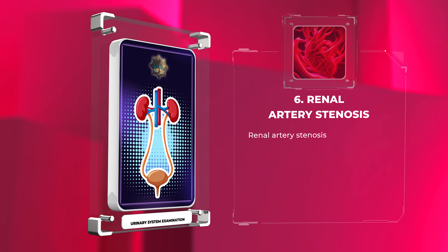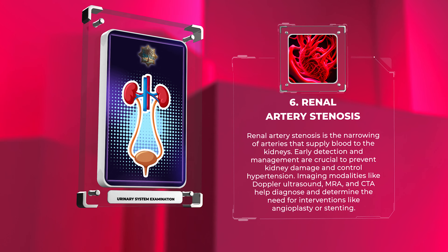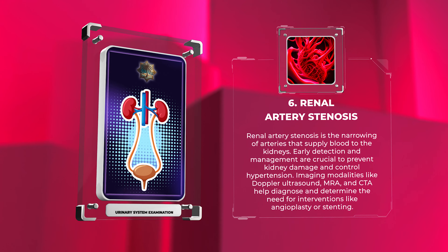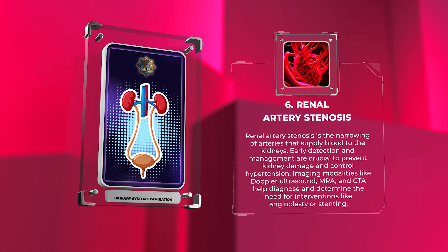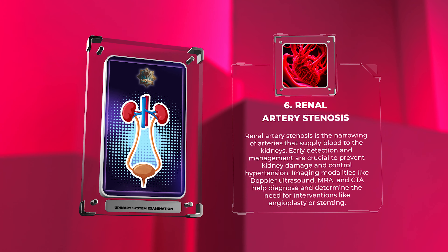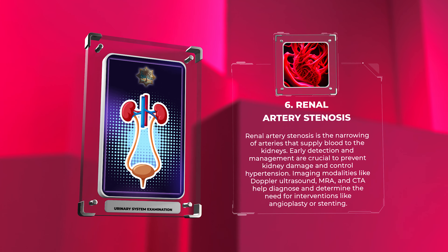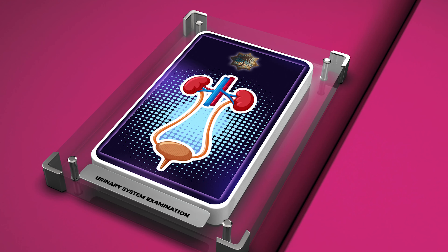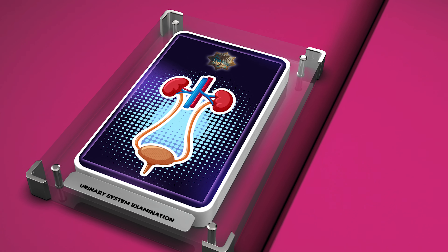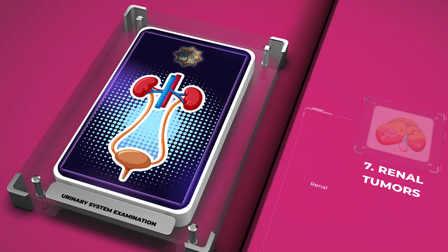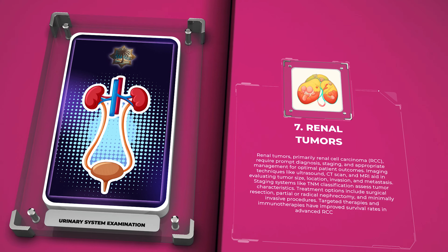Renal artery stenosis involves narrowing of the arteries that supply blood to the kidneys. Early detection and management are crucial to prevent kidney damage and control hypertension. Imaging modalities like Doppler ultrasound, MRA, and CTA help diagnose and determine the need for interventions like angioplasty or stenting.